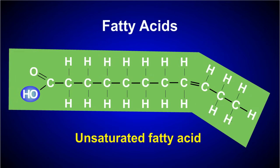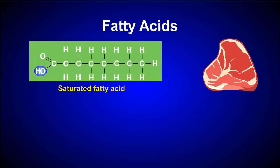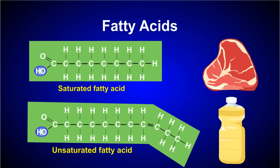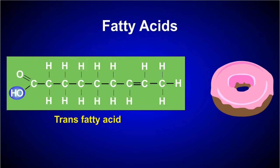Unsaturated fatty acids have one to several double bonds. Double bonds result in kinks in the fatty acid chain, which affects the melting point of the fat. Animal fats have saturated fatty acids and are solid at room temperature, while vegetable oils have one or more double bonds and are liquid at room temperature.